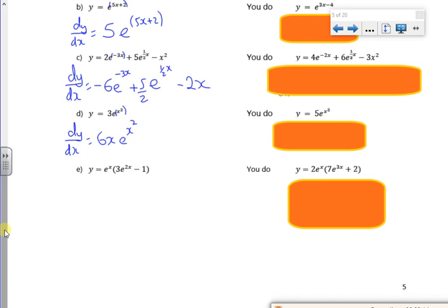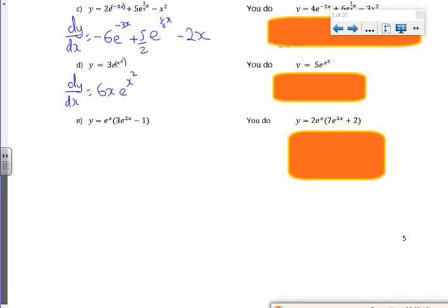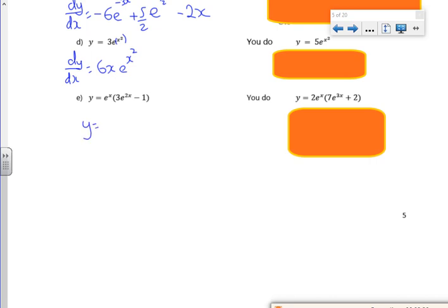Right, with this one, because we've not learned something called the product rule yet, we need to expand our brackets first. So I've got - remember, if it was e to the x times by e to the 2x, we add the powers together.